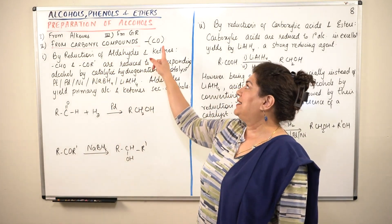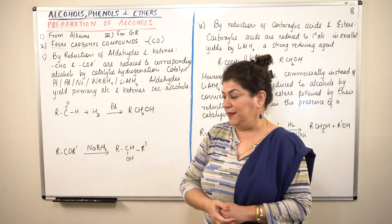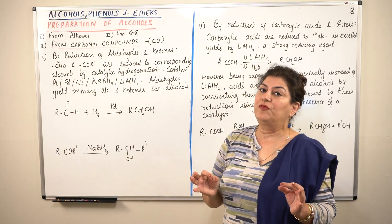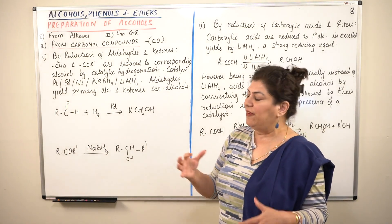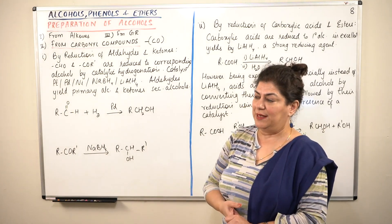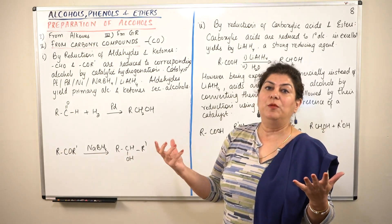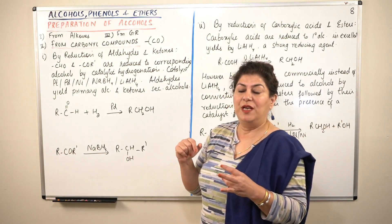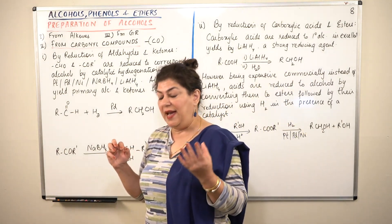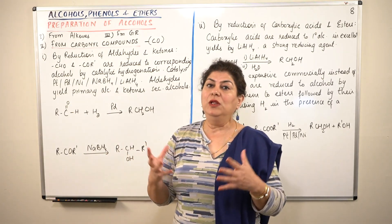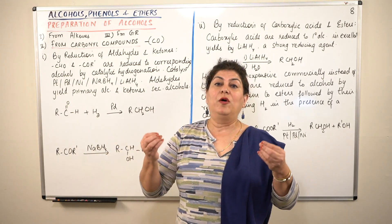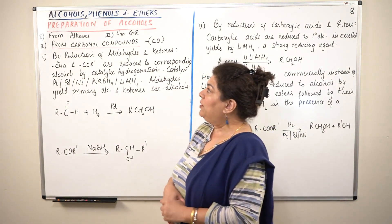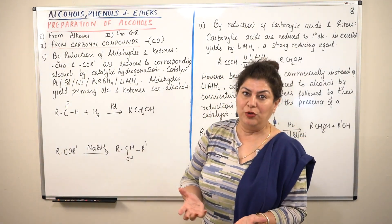Carbonyl compounds are compounds that have carbon and oxygen in them. When we want to prepare alcohols from carbonyl compounds we have two different ways of doing it. The carbonyl compounds would be aldehydes, ketones, carboxylic acid and esters. All are organic compounds or hydrocarbons that have oxygen in them. Carbonyl compounds are those which have the carbonyl group.